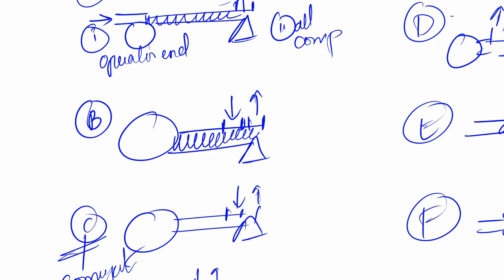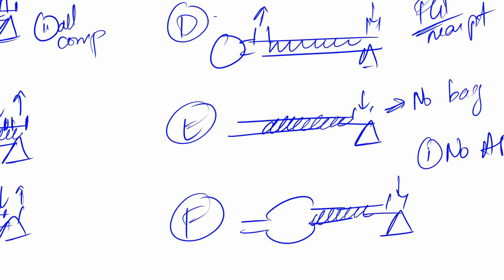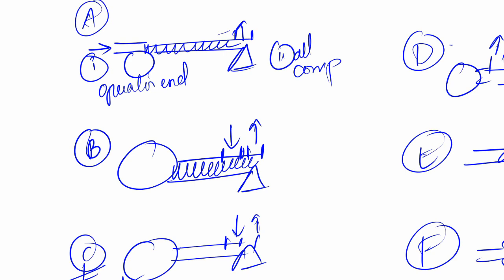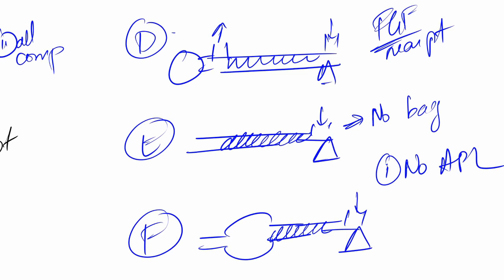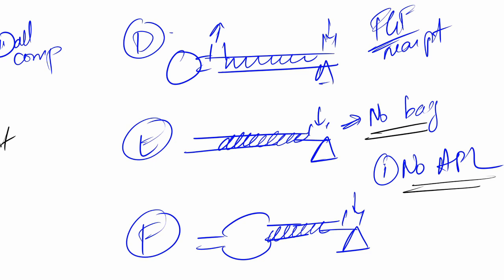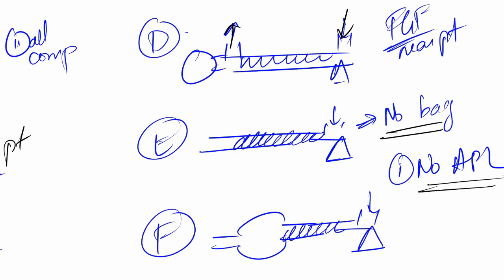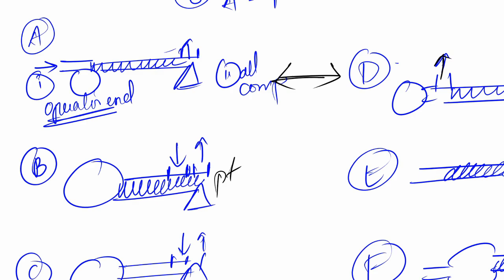To summarize identification: A has all components with fresh gas at the operator end. B has all components but fresh gas is towards the patient end. C is the same as B but without a corrugated tube. E and F do not have an APL, and E does not even have a bag. D has FGF nearer to the patient and APL at the other end — essentially a reversed version of A in terms of FGF and APL positions.